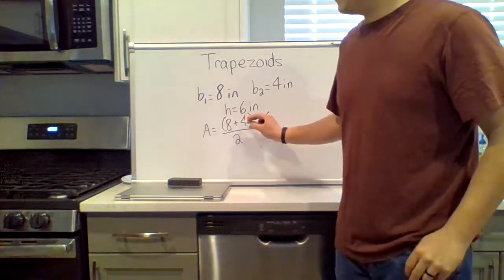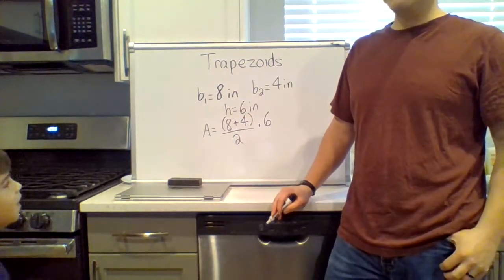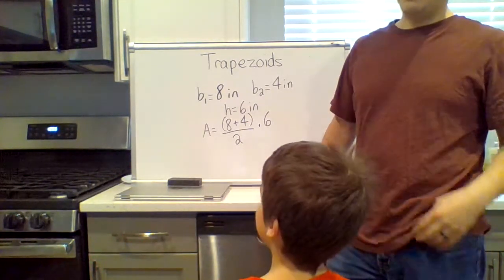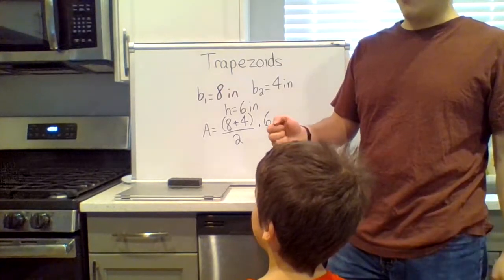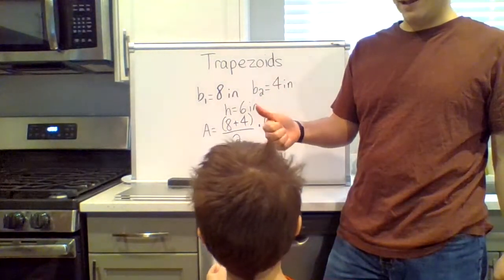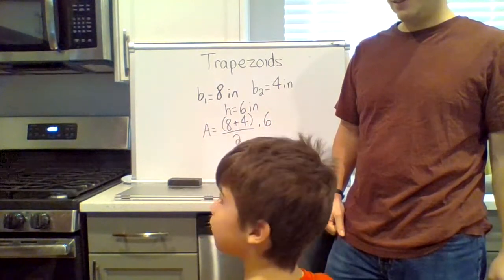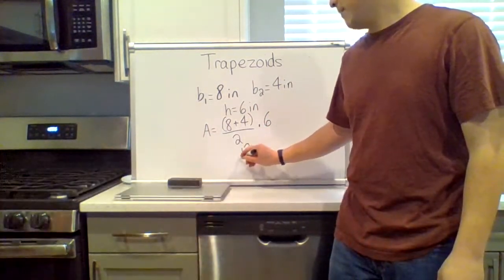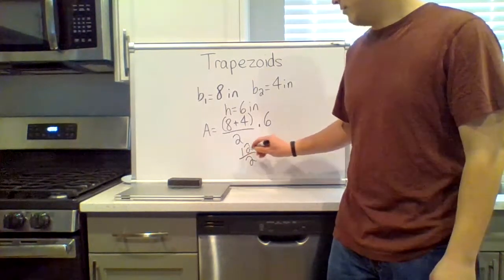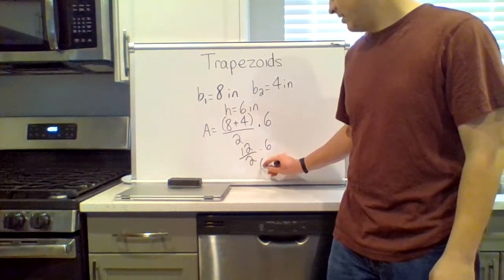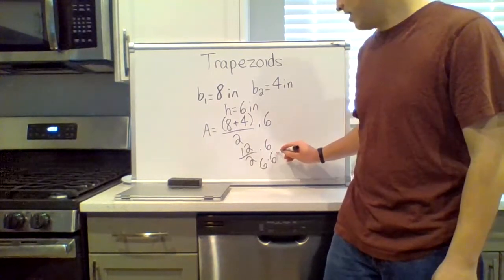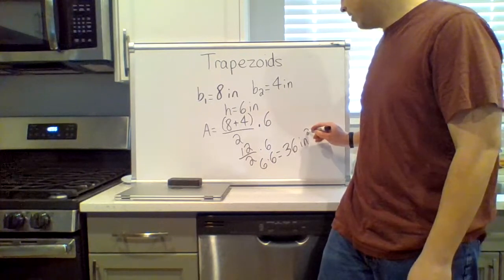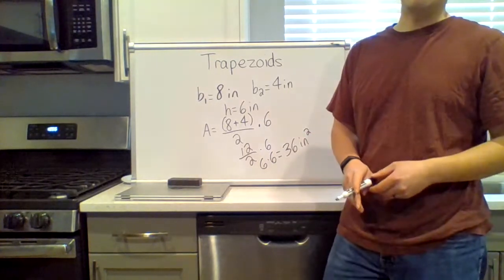Eight plus four, you know what that is Nathan? Start at eight, count by four. Twelve. Okay, twelve divided by two times six. Twelve divided by two is six, six times six is thirty-six. The answer is thirty-six square inches. That's how you do it. They give you the two bases and the height.